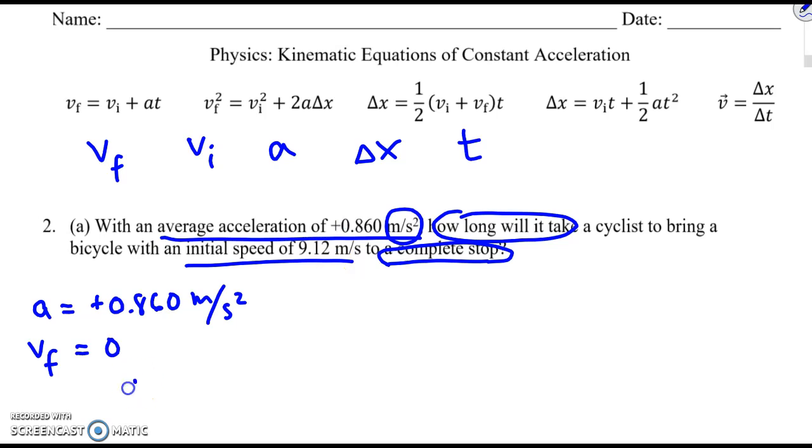Her initial speed is 9.12. And I don't know the direction right now, do I? Because they haven't told me left or right, east or west. I know that this is positive, but I don't know if this one is positive or negative. That'll become clear to us in a bit.